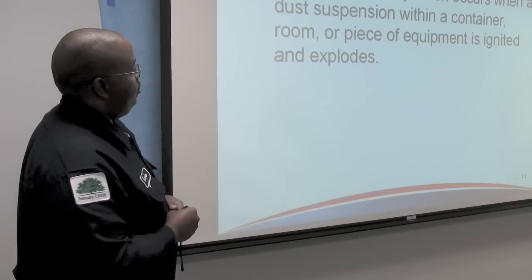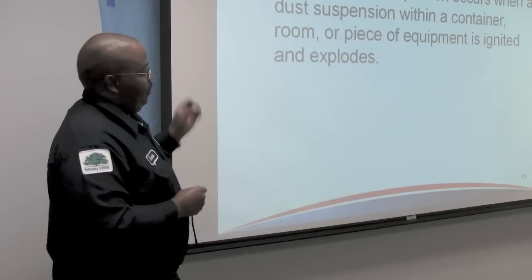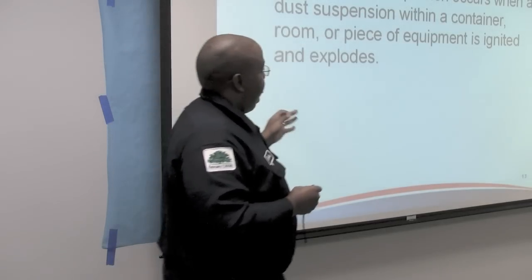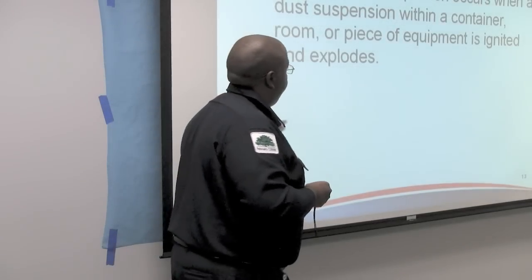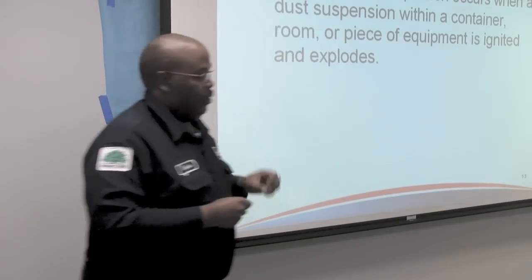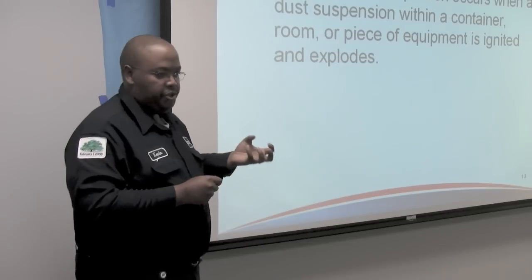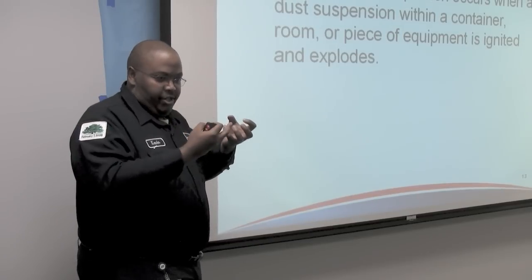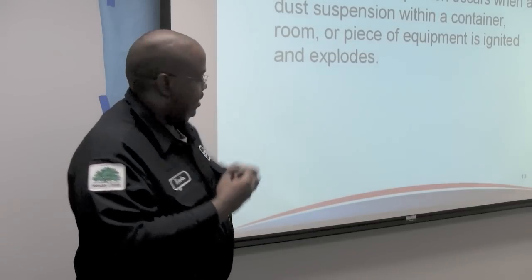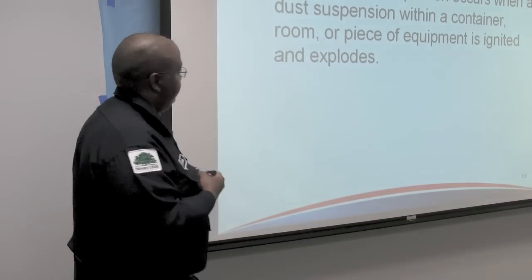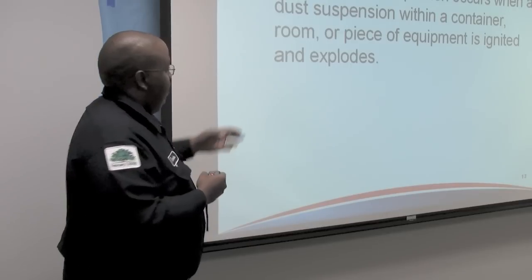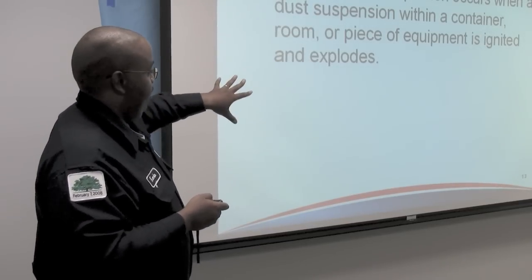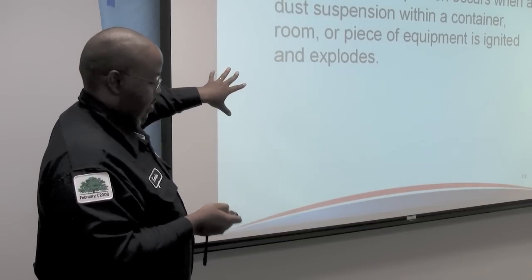Types of combustible dust explosions: you always have a primary explosion. That primary explosion occurs when there's a small-scale suspension that meets a source of ignition and you get that deflagration — in a small piece of equipment or a room.